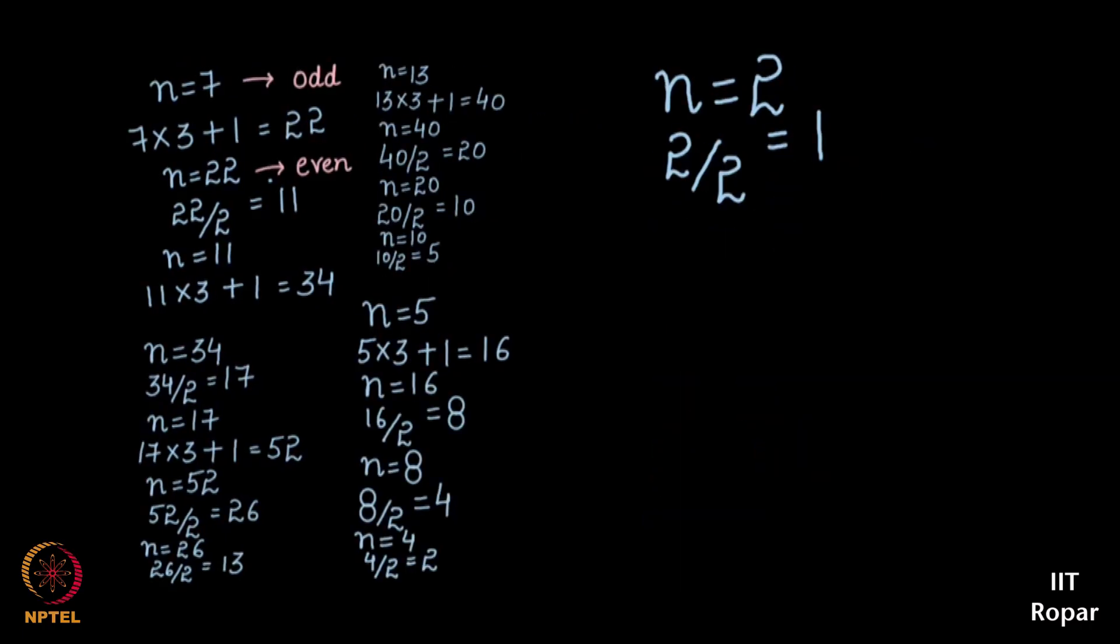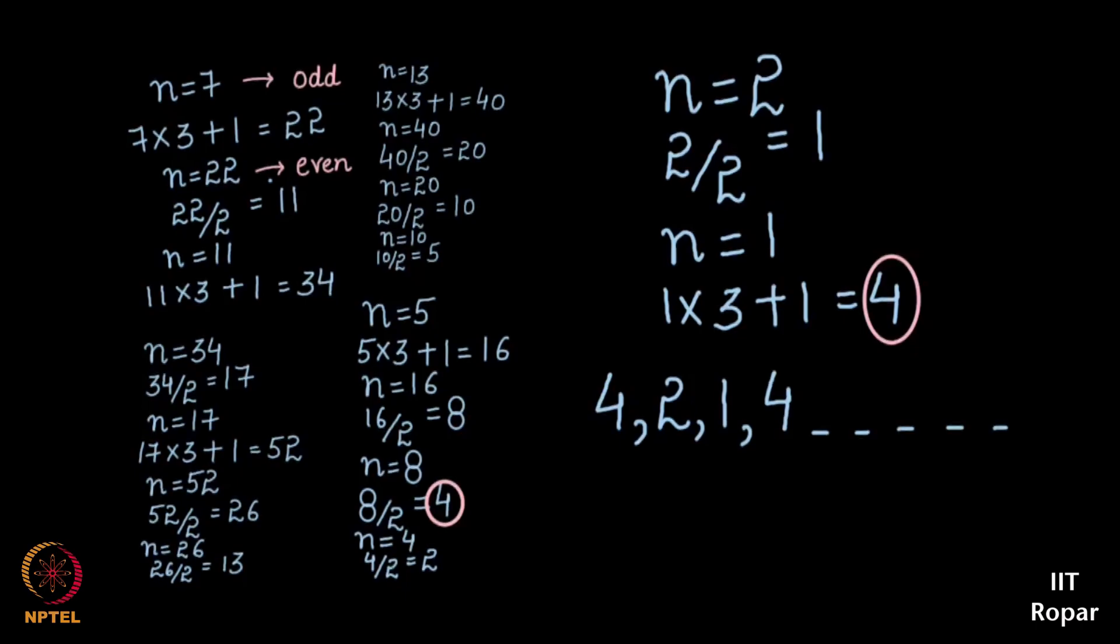1 is odd, so into 3 plus 1 is 4. Again we saw 4 already, so whenever you get 4, 4 becomes 2, 2 becomes 1 and 1 again becomes 4, you see this is an infinite loop. So what we do is we say while the number is greater than 1, you do this. Do what? If the number is even make it become half, the number is odd make it become 3 times that number plus 1.